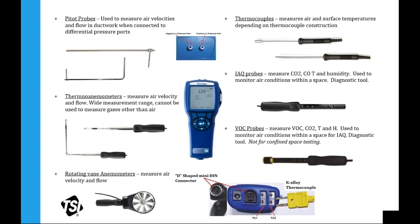This next slide shows some of the different probes and capabilities the instrument can measure. On the left side you see more ventilation-focused probes: pitot probes for duct traversing, thermal anemometers for low-velocity high-accuracy measurements, and rotating vane anemometry. On the right side are other pluggable probes: thermocouples, IAQ, and VOC probes. We'll focus more on the left side for ventilation measurements, but we will touch on IAQ probes for meeting ASHRAE 62 minimum ventilation guidelines.